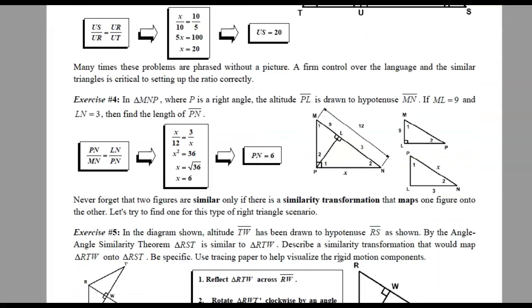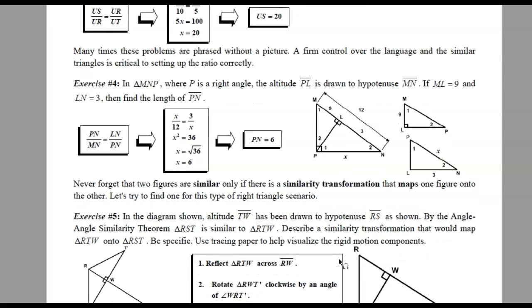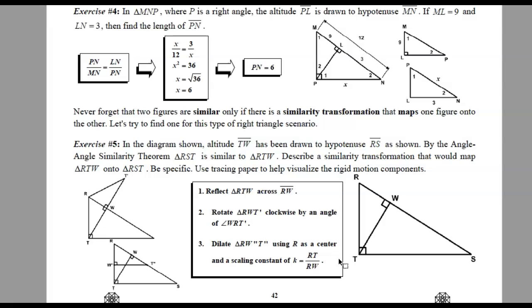And then we don't want to forget that two figures are similar only if there's a way to map them. So this is just kind of wrapping that concept up. In this diagram shown, we have altitude TW. And it's been drawn to hypotenuse RS. And so that's over here. We have right triangle, TW right here, altitude, going this way. And we also have angle-angle similarity to show that these two triangles are similar. We've talked about that before. So now, instead of just using angle-angle, we want to try to find a set of motions, a set of transformations that will map these onto each other.